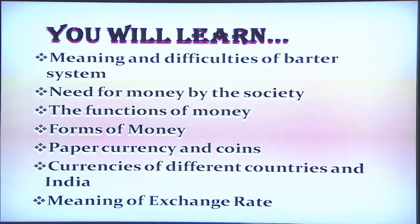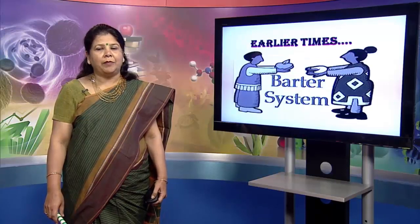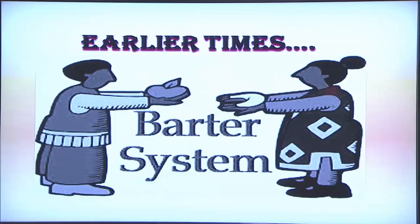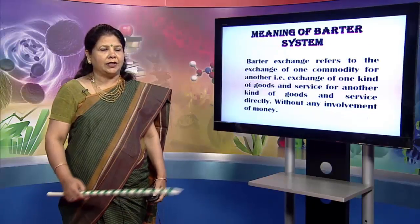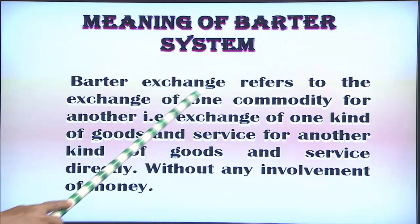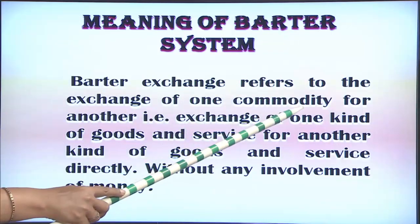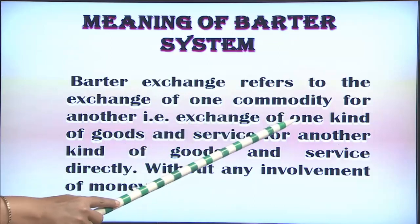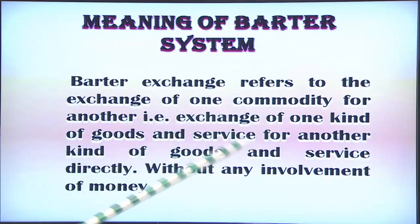What were we doing before money came? It was the barter system — that is, we were exchanging goods and services with the help of the barter system. Barter exchange refers to the exchange of one commodity for another, that is, exchange of one kind of goods and service for another kind of goods and service.